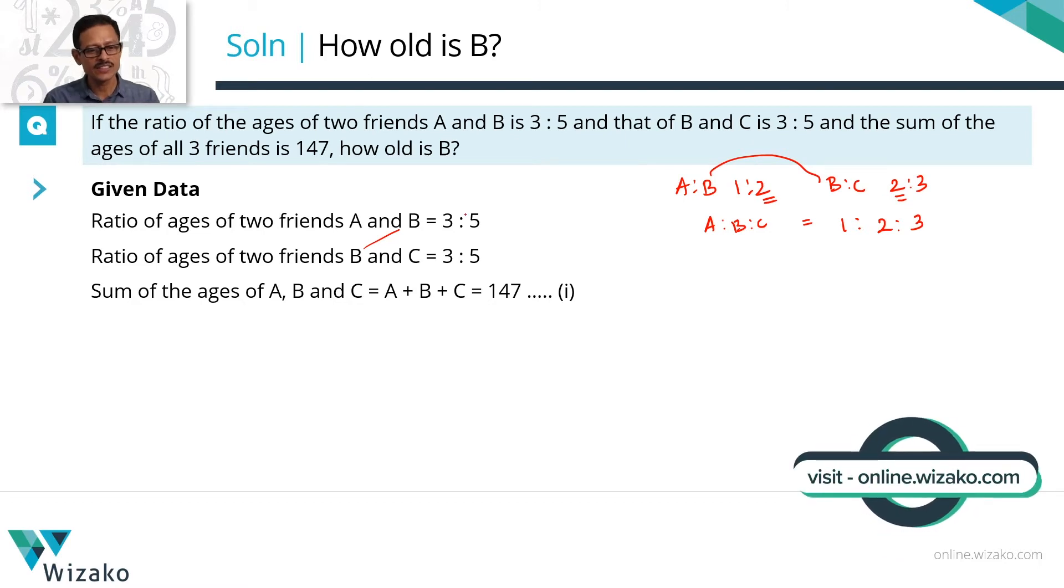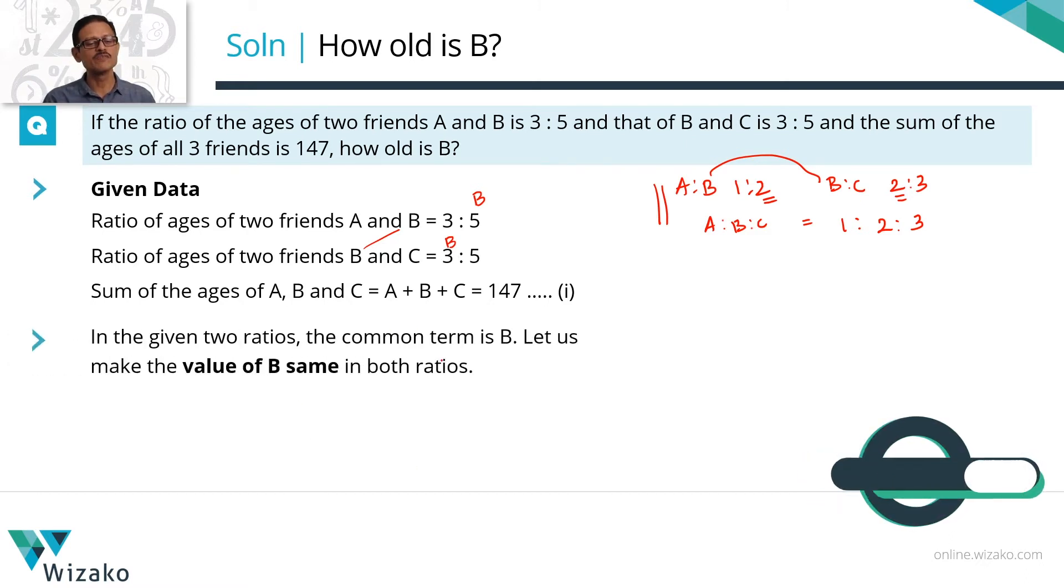Is that the case with us? Here, the numerical value of B in the first ratio is 5. The numerical value of B in the second ratio is 3. Unlike in this example that we took, where the value of B is the same in both ratios, it's not in this case. So what do we do? Let's make the value of B in both these ratios the same.